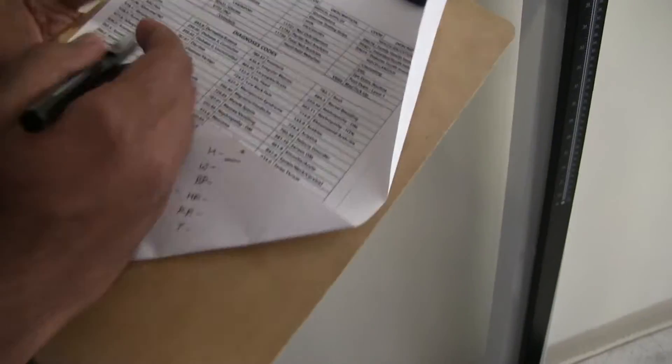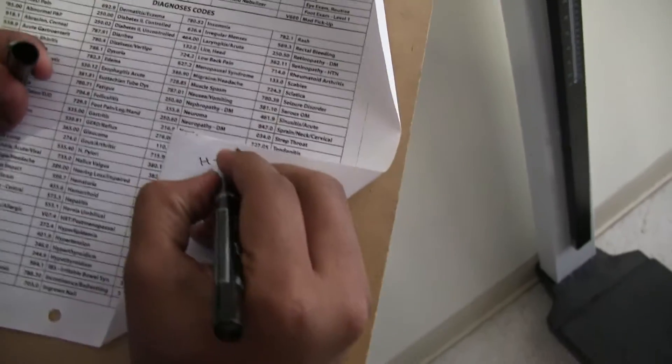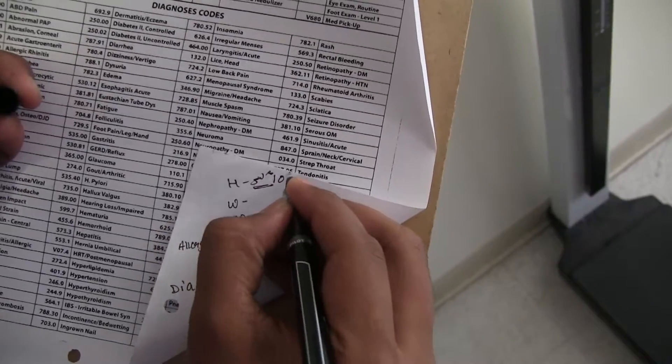So in your chart you'll just write down, for height just write down 5, 10 inches and then you can transfer it later.